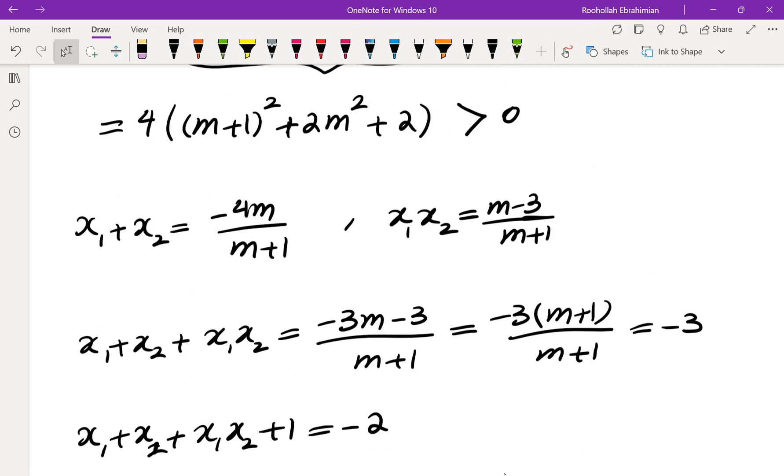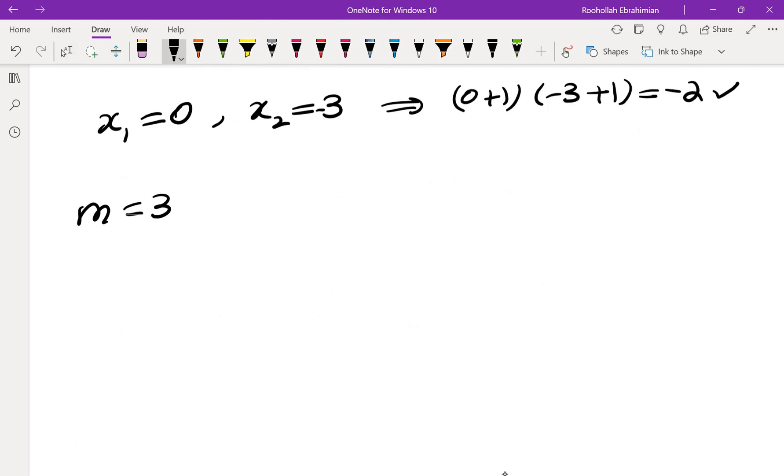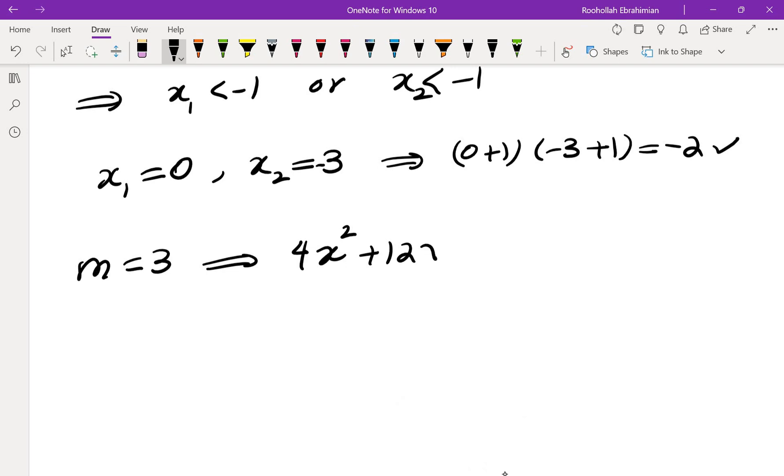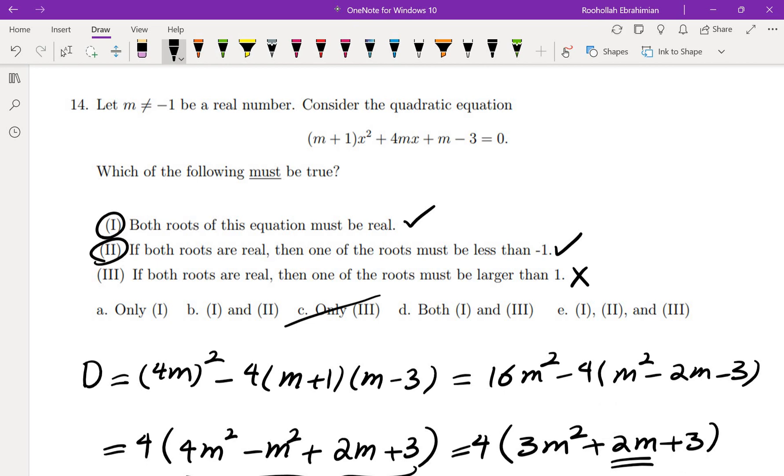Well in order to get 0 we need m to be 3. So if you plug in m = 3 the equation becomes 4x² + 12x + 0 = 0. So one of the roots is 0 and the other root is negative 3. Neither of them are more than 1. It means this one is in fact false.